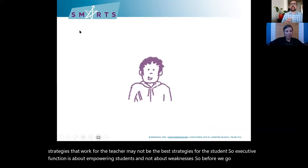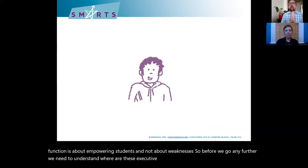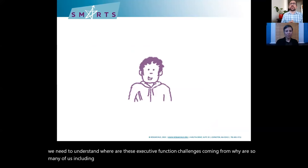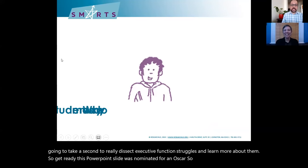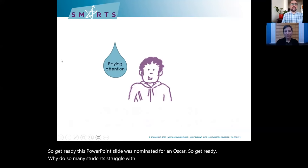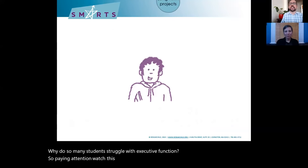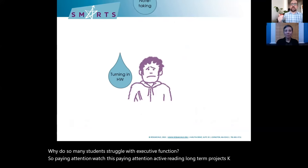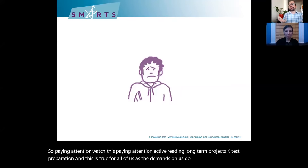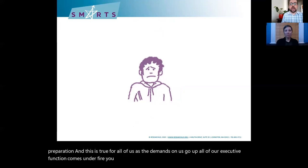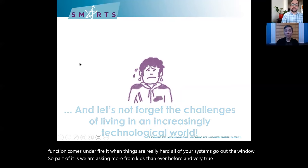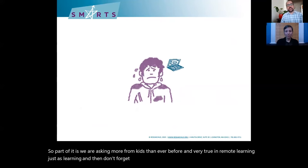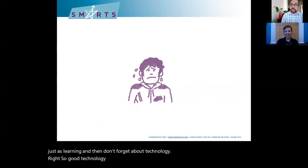Before we go any further, we need to understand where these executive function challenges are coming from. Why do so many students struggle? We are asking more from kids than ever before. Paying attention, active reading, long-term projects, test preparation — as the demands on us go up, all of our executive function comes under fire. And then don't forget about technology. Technology really can interfere with the way executive function develops. Students build their executive function when they understand the end goal and can sequence the steps to get there.